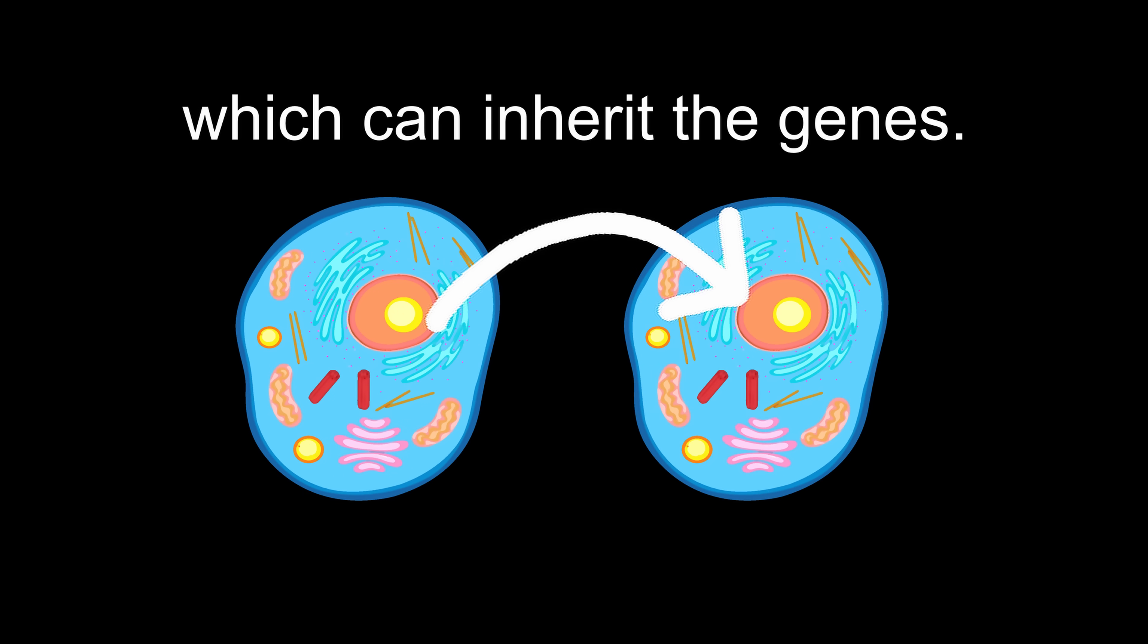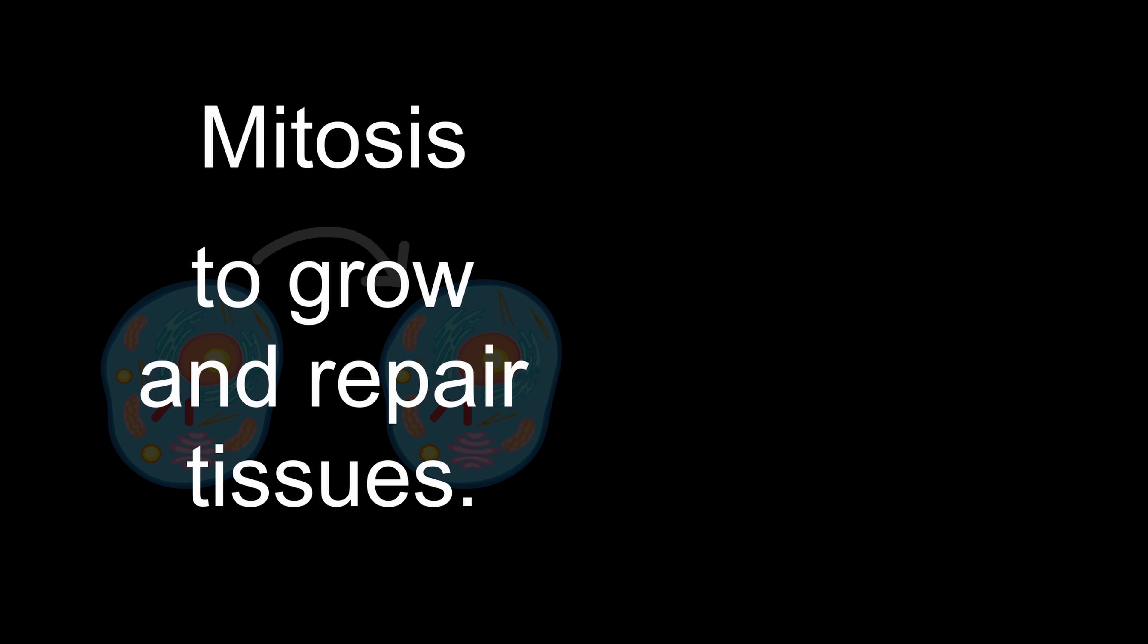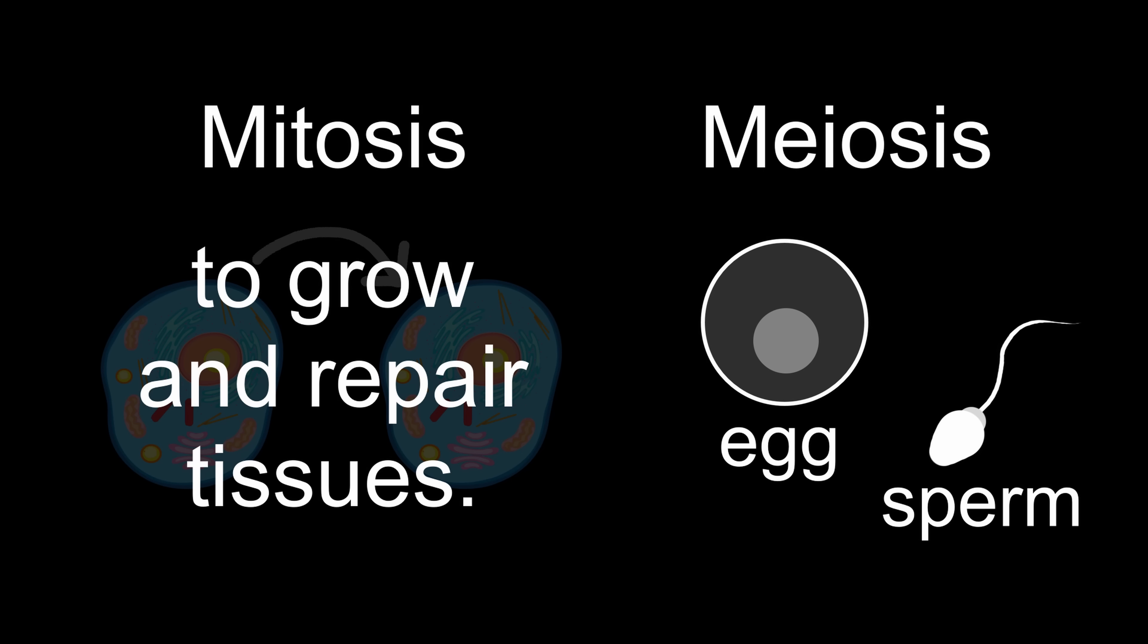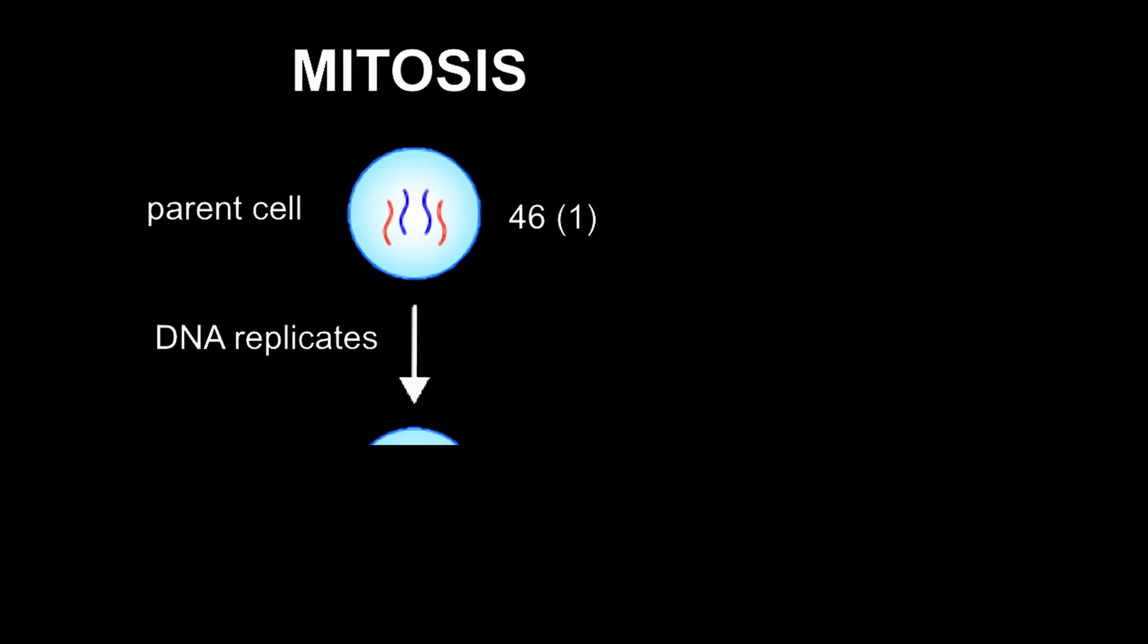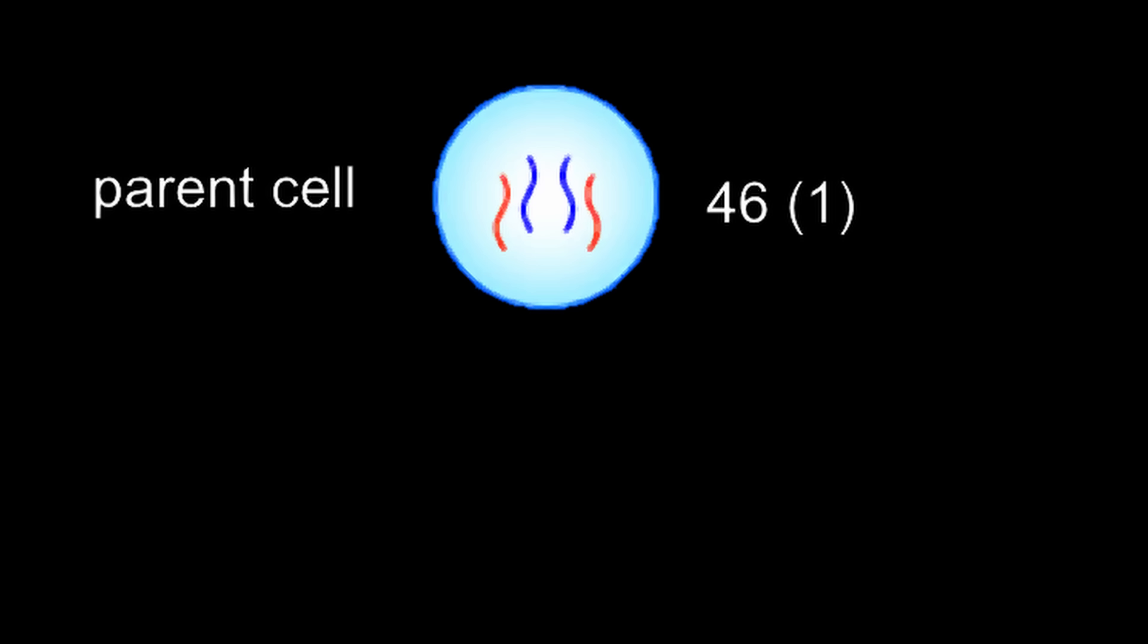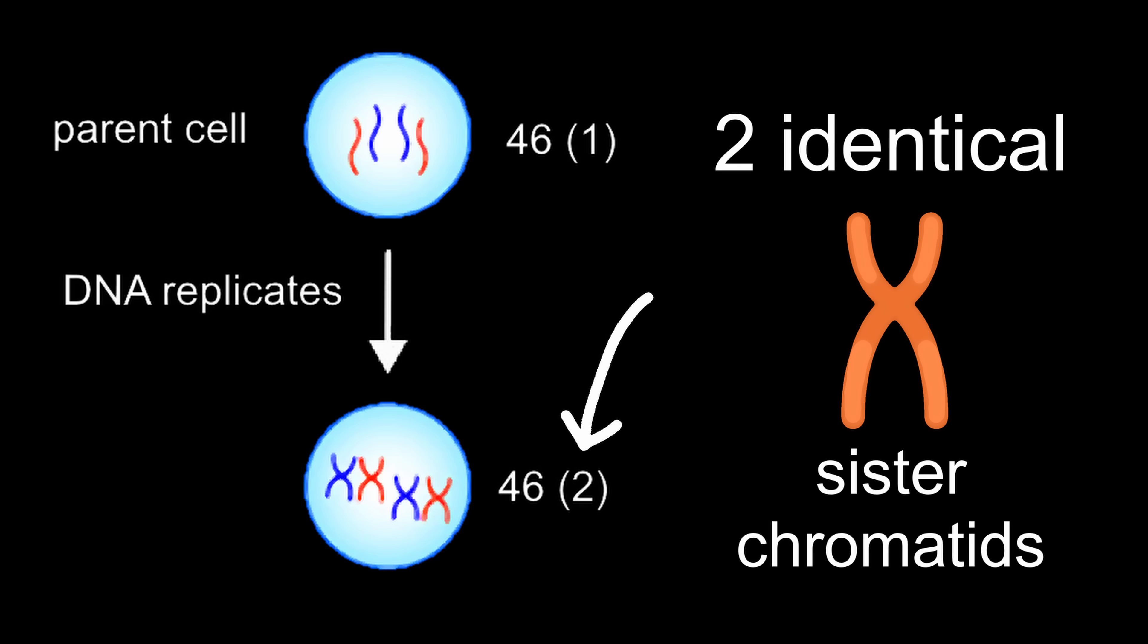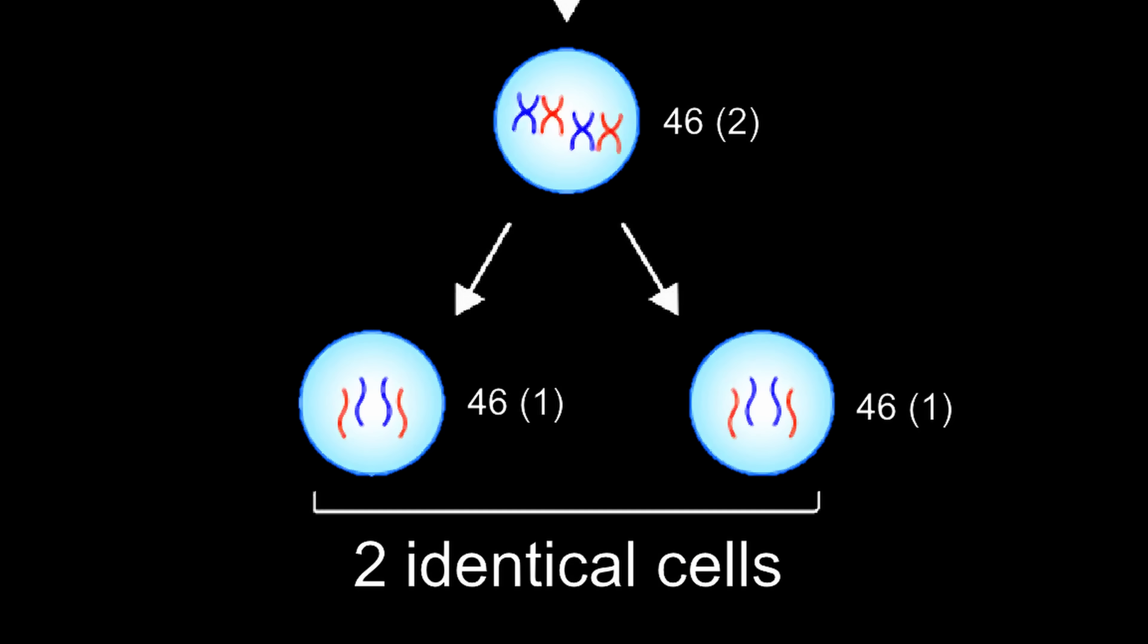Now, for genes to even be passed on, the body has to make new cells which can inherit the genes. There's two main mechanisms, mitosis, which is how the body makes identical copies of body cells to grow and repair tissues, and meiosis, which is how the body makes gametes, so sperm and egg cells. Mitosis starts with a diploid cell, so a cell with two sets of chromosomes. These chromosomes consist of one chromatid, which has to be replicated for the new cell. After replication is when you see the familiar X shape consisting of two identical sister chromatids. These are split into two identical diploid cells with two sets of chromosomes consisting of one chromatid.